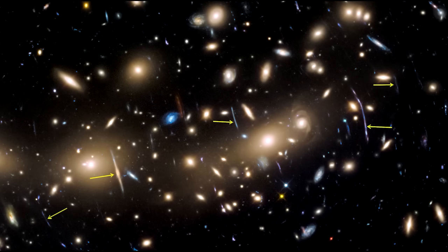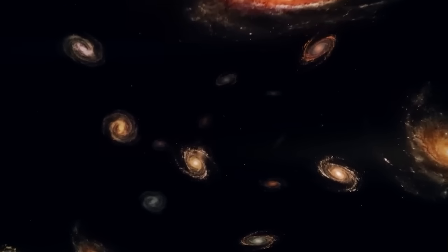Because of the lensing effect, 14 of the 19 galaxies are tripled in the image, two are quadrupled, and one of them even has five images.